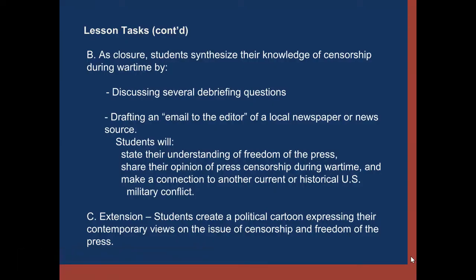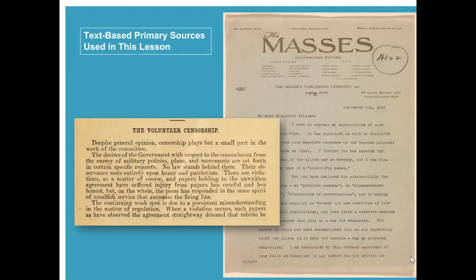Once students have looked at the visual source, they look at two text-based primary sources. On the left is a report by the Committee on Public Information from 1918 — a report to President Wilson describing how the press has mostly responded with, quote, 'honor and patriotism,' to voluntarily censor itself regarding military information such as locations of bases and troop movements. The source on the right, titled 'The Masses,' is a letter from its editor Max Eastman directly to Woodrow Wilson in 1917, after the passage of the Espionage Act.